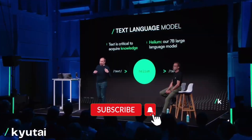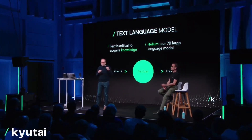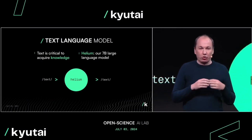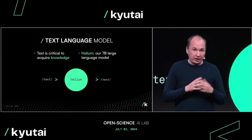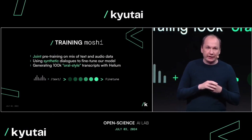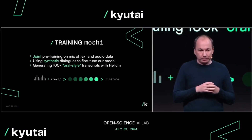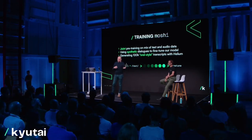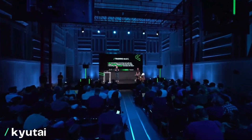To train Moshi, we rely on text to acquire knowledge. The first step was to train a text-only large language model that we called Helium. The second step is joint pre-training on a mix of textual data and audio data. The goal is to learn a common representation between text and audio, so that when the model is generating audio, it can use all the knowledge acquired from text training. Once we've done these two steps, we get what we call a foundation model for audio — a model that can take audio as input and generate audio, but at that point it doesn't know how to hold a conversation.